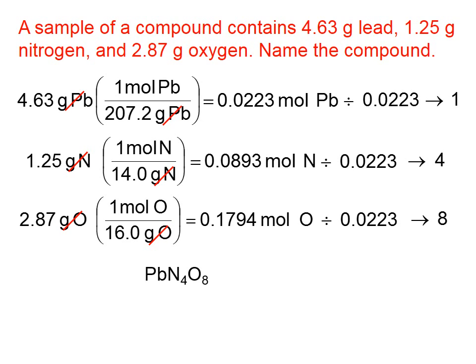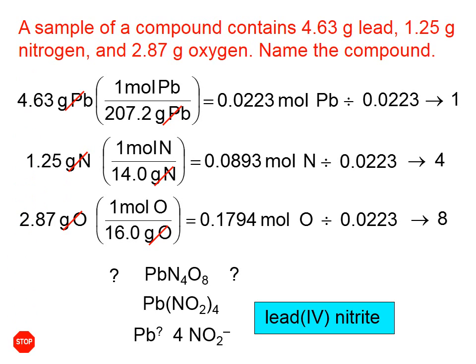Now, the question says name that compound. Well, I don't know how to name that. So, is there any way we could put that into a form that might look a little bit more familiar? And the answer is yes, because isn't it true that this formula also has four moles of nitrogen and eight moles of oxygen for every one mole of lead? Now, that we know how to name. This is the nitrite ion. Each nitrite ion has a one minus charge. There are four of them, as shown in that formula, which means that this lead needs to have a four plus charge. Which means that the name of that compound is lead four nitrite.